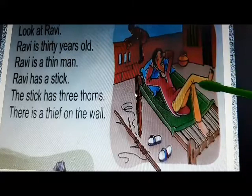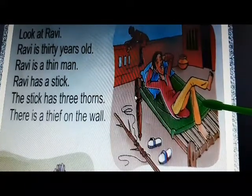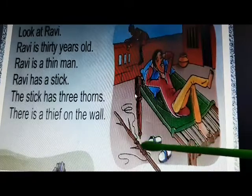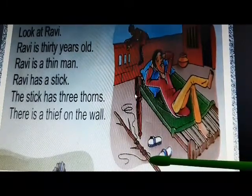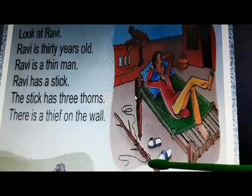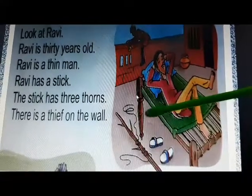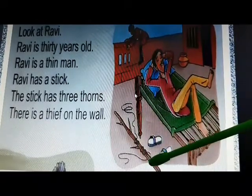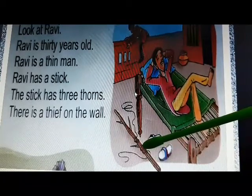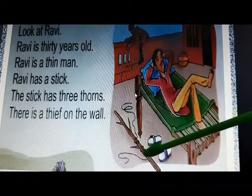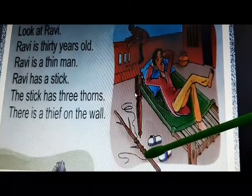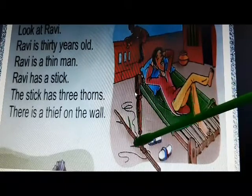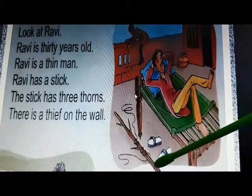Let's see — his eyes are closed, which means he is sleeping. And look here — what is this? This is a stick, so there is a stick on the floor. And if you look carefully, there are some thorns on the stick — like there are thorns on the stem of a rose flower. There are some thorns on this stick. Let's count how many thorns there are: one, two, and three. So the stick has three thorns.